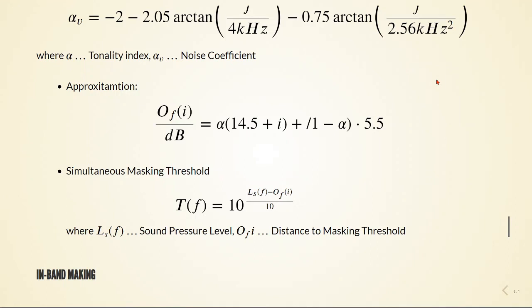With the sound pressure level LS and the offset O of I, the masking threshold can be given by this equation here. So we have the sound pressure level and this is the distance to the masking threshold.